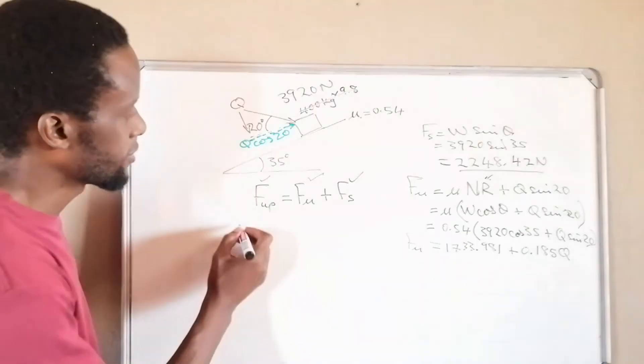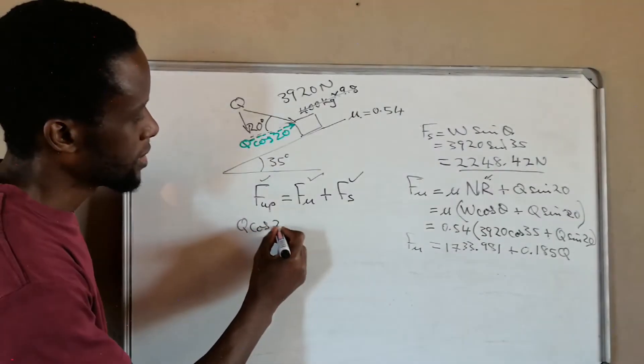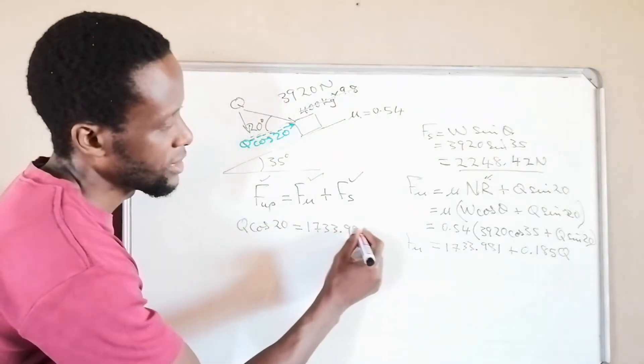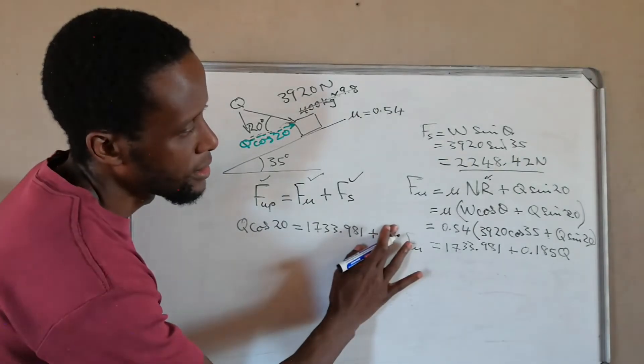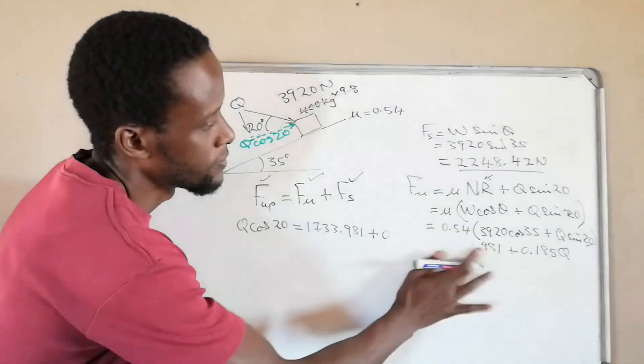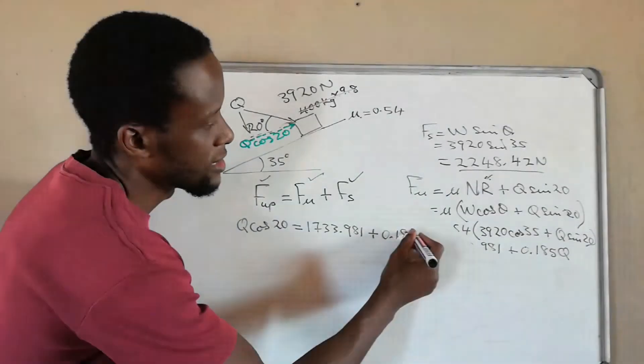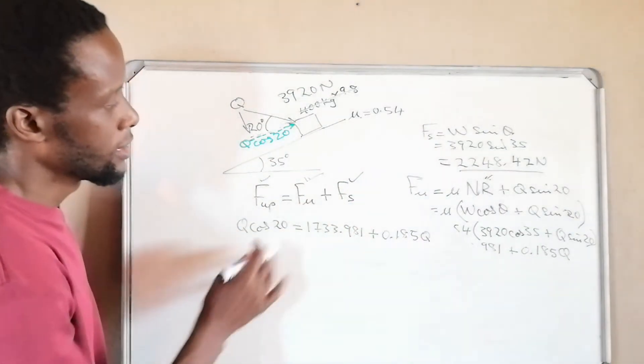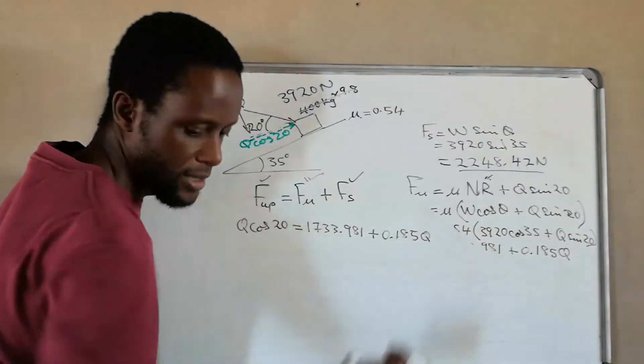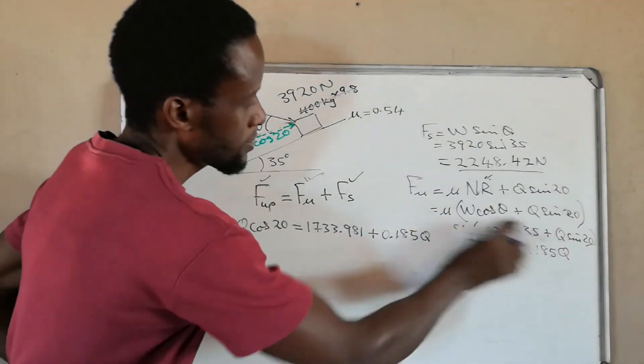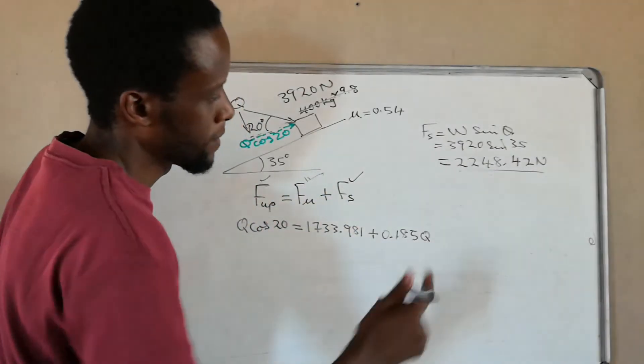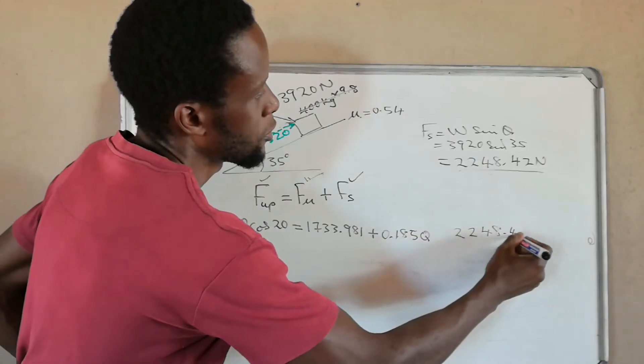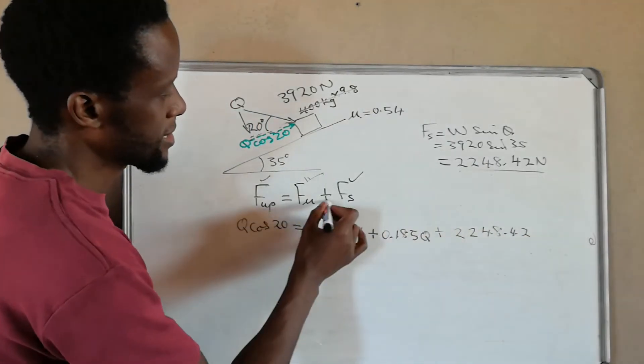All right, so what we have is q cos 20 is equals to this one, 1733.981, plus 0.185q. Okay, so this is this guy along the friction force, then we add to this part. Now let me just create some space. 2248.42. Okay, now remember it's a plus. This plus is that one, this plus is from the other one.